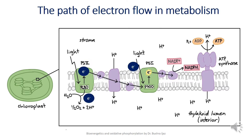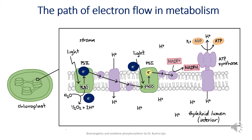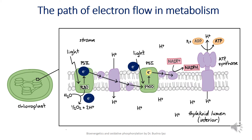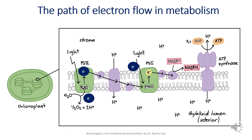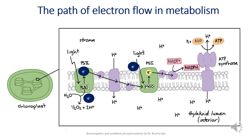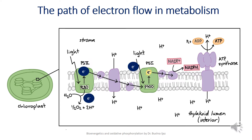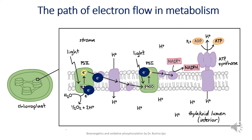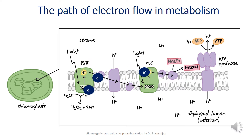In other parts of the bioenergetics lecture series, we will study the general types of metabolic reactions in which electrons are transferred, and after considering the theoretical and experimental basis for measuring energy changes in oxidation-reduction reactions in terms of electromotive force, we will also discuss the relationship between the force expressed in volts and the free energy change expressed in joules.